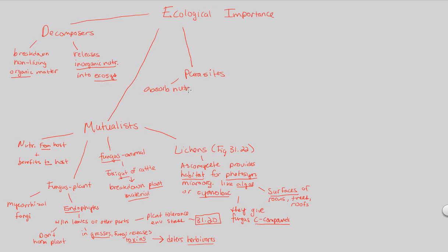Absorb nutrients from a living host, but there's no reciprocation right now. There's no giving back. A good example of this to remember is the chestnut blight. This is a very parasitic fungi in plants. So that's a plant-fungus parasitic relationship.